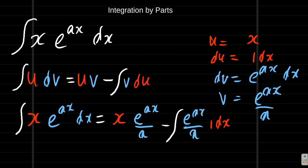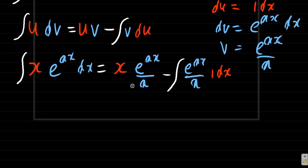So now this is equal to, this is going to have x, let me just write them here, x e to the ax over a minus